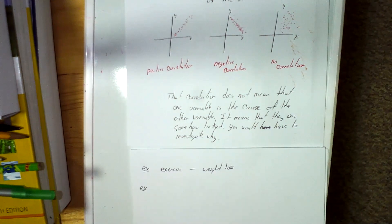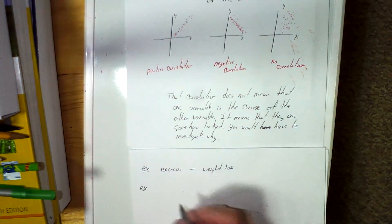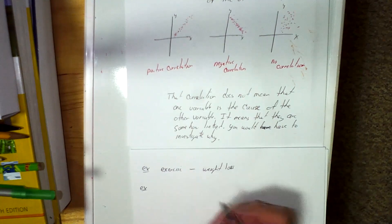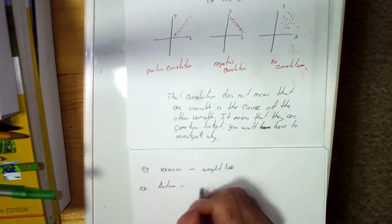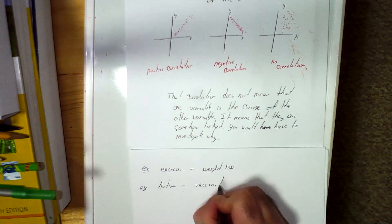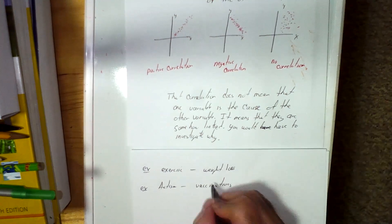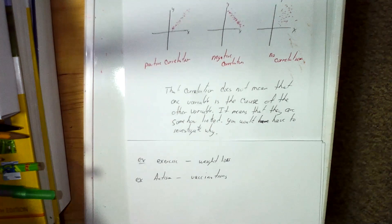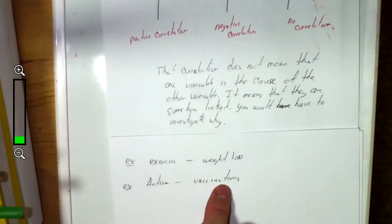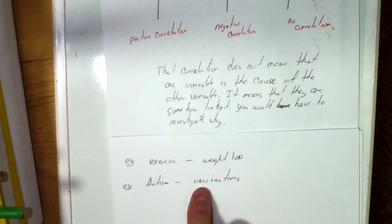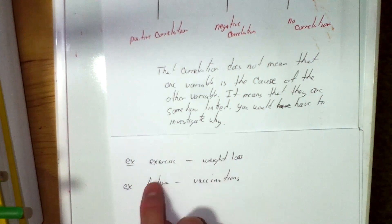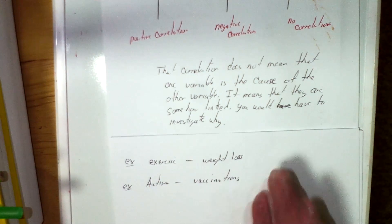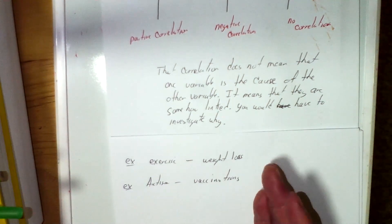You could also look at two variables such as a common one you see in the news — autism and vaccinations. Sometimes people say autism and immunizations are linked. But they have not proven that vaccinations are the cause of autism. We don't know — it could be genes, it could be environmental. They are linked, but we don't know the cause.